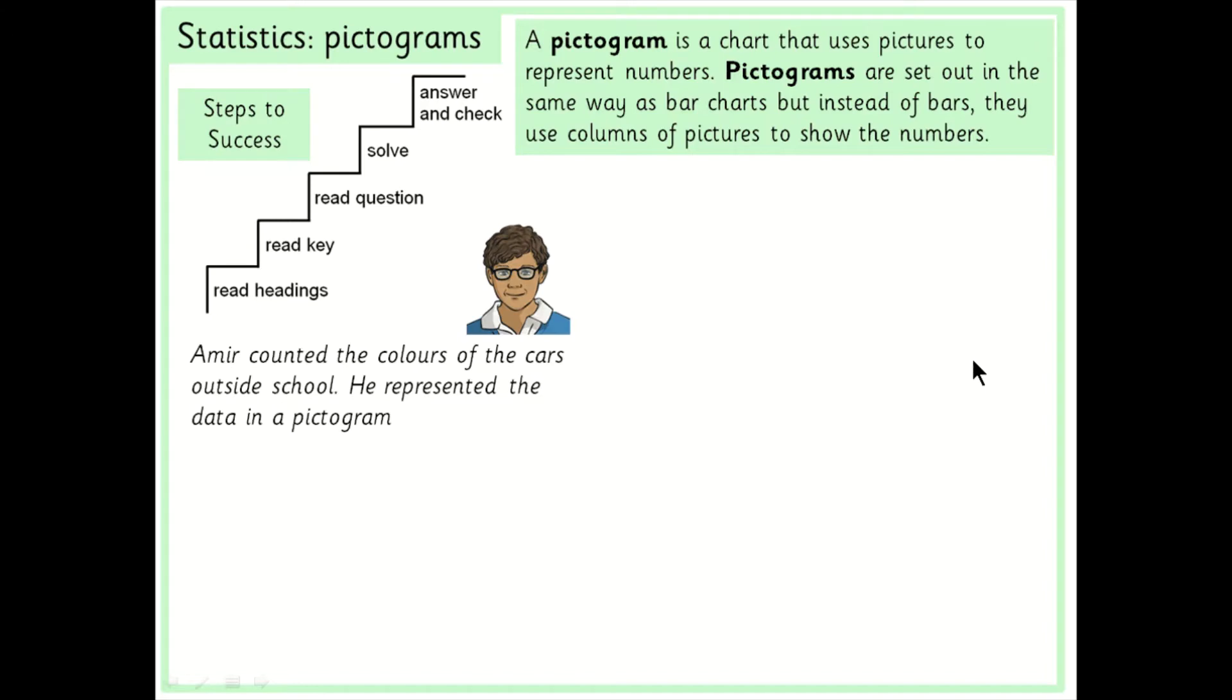Okay, our pictogram. So our pictogram today is based on this lovely boy called Amir. Now he counted the colours of cars outside his school and he put that data into a pictogram which looks like this.